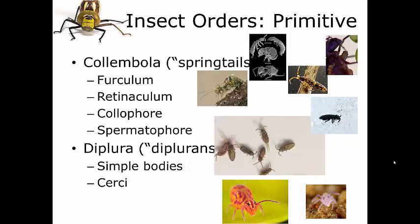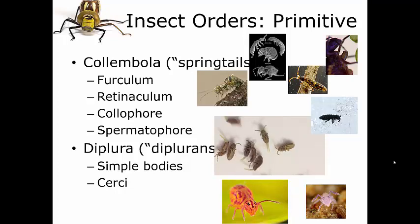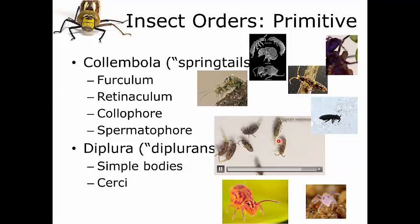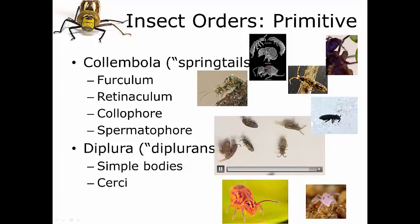The very first order is called the Collembola. These insects are very tiny — less than six millimeters long. They're wingless, and they tend to be found in damp habitats like small pools, damp leaves, or in the soil. They are commonly known as springtails because they have a ventral spring-like apparatus that allows them to jump considerable distances. You can see that close-up in the video — those spring-like structures are what give the springtail its name.